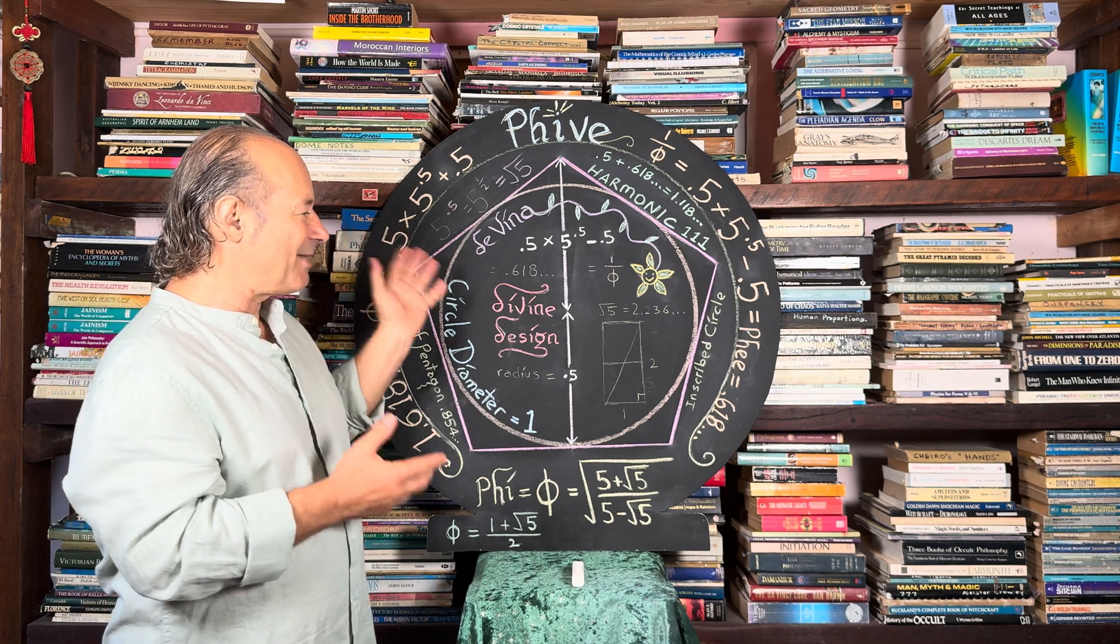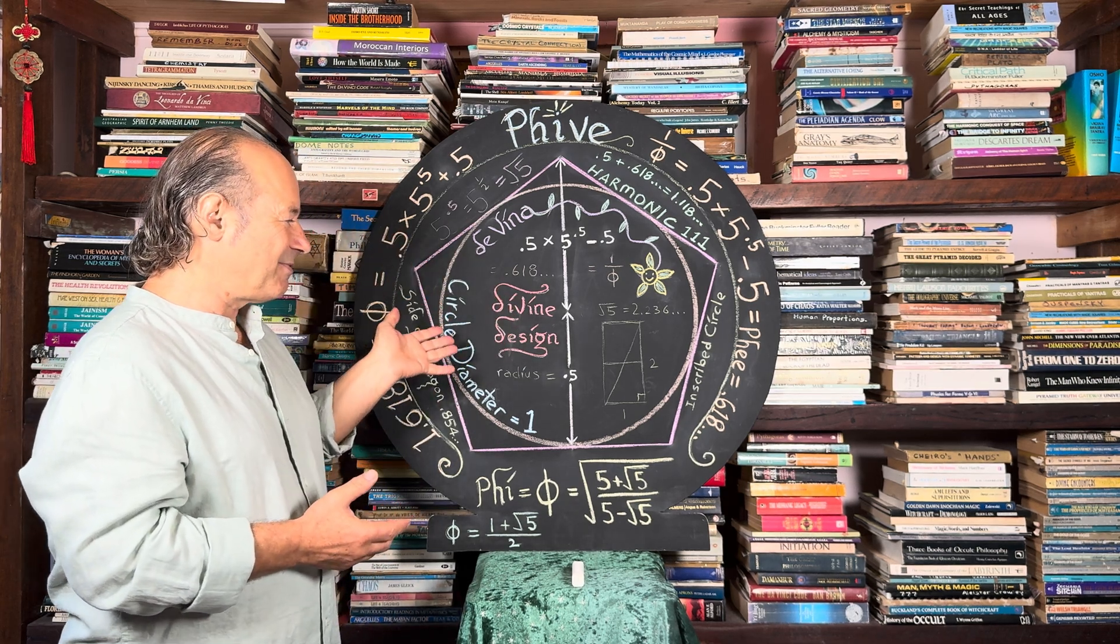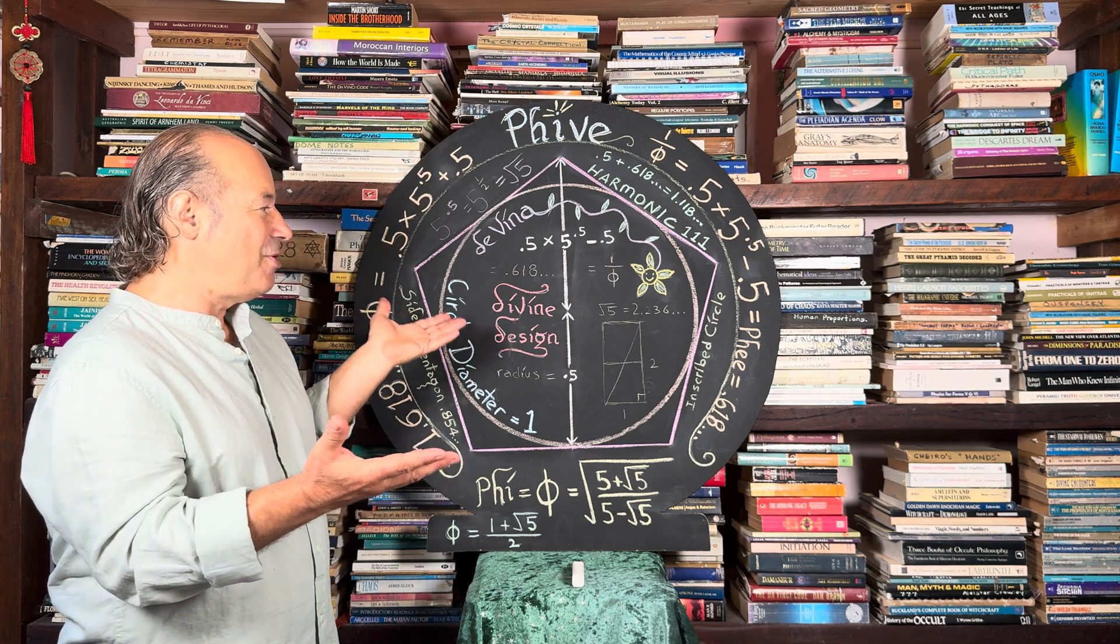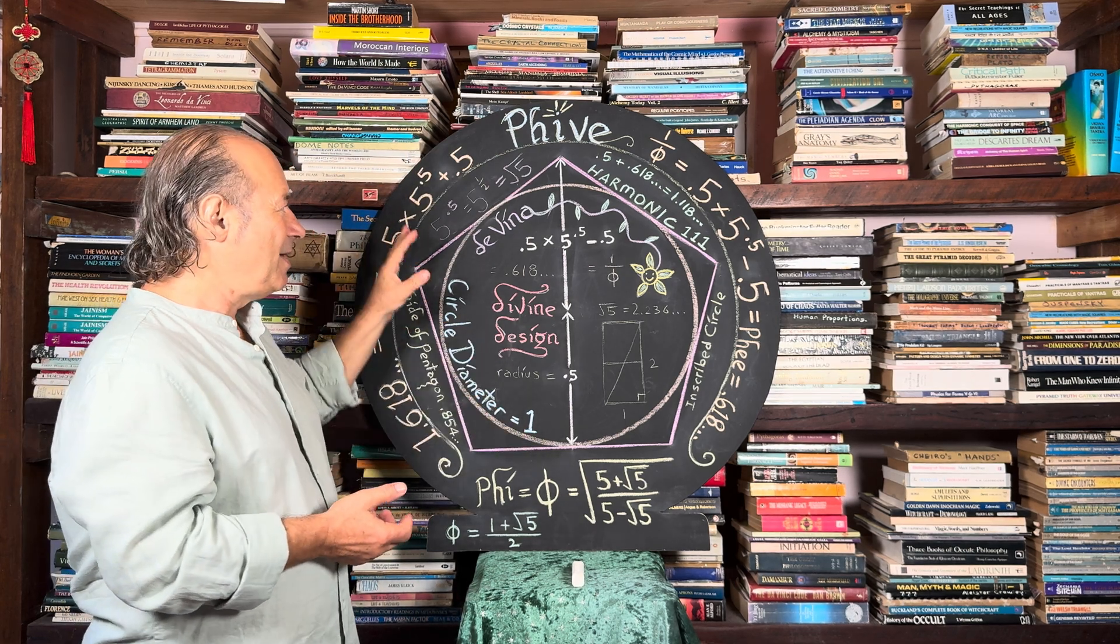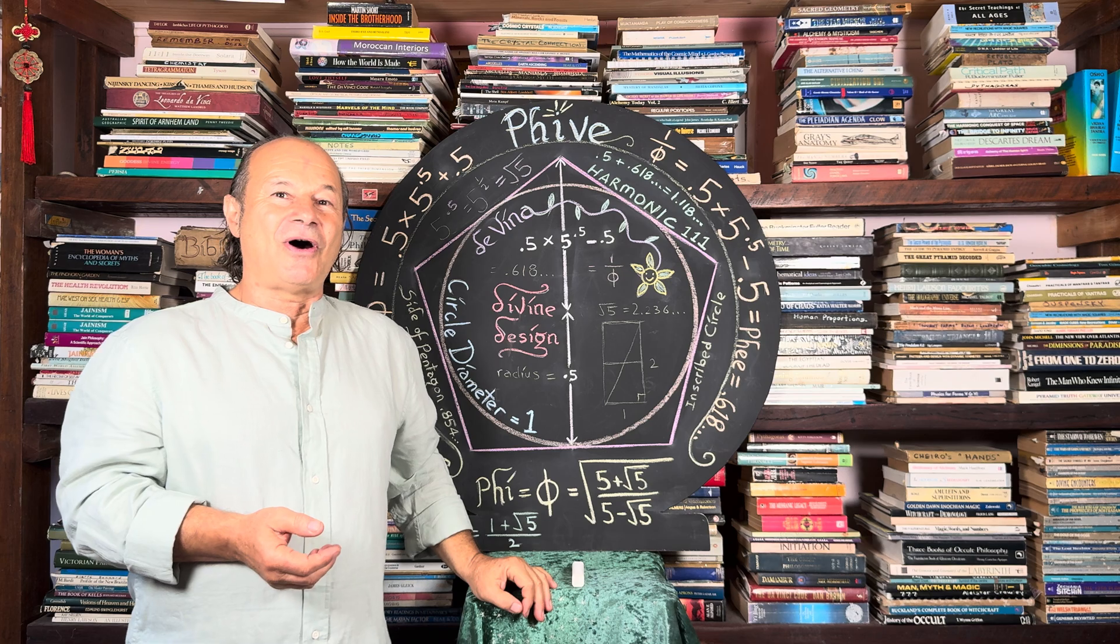In fact, I believe that every cell in our body is based on sacred geometry. And the best symbol of human consciousness is the Pentagon, because it's all made up of what's called the divine proportion.